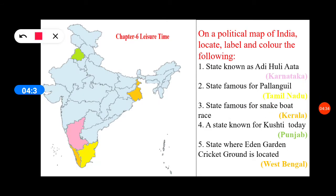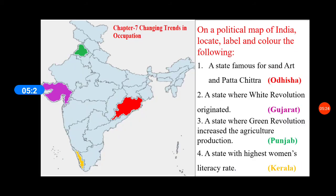Next, Chapter Number 6 - Leisure Time. State known as 'Adda Hulli Atta' — Karnataka, pink color से करना है। State famous for Palang Guli — Tamil Nadu, yellow color से। State famous for snake boat race — Kerala। A state known for Kushti (wrestling) today — Punjab। State where Eden Garden cricket ground is located — West Bengal, orange shade से करना है। यह था हमारा Chapter Number 6 का Map skill।